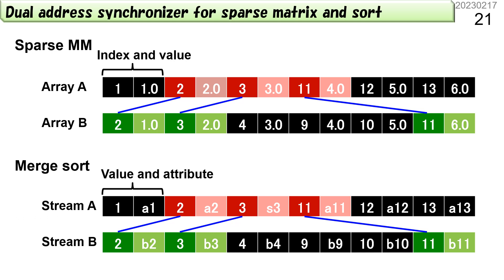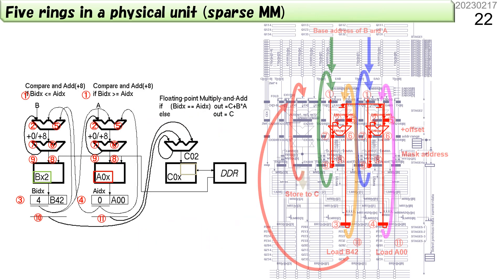Let's see the data format. The number and the value are packed in an element. In sparse MM and merge sort, two address generators should stop and go based on the relationship of the loaded number. To find out two elements with the same number and multiply them, the address generator on the smaller side should go forward, and the other side should stop. In IMAX3, each unit has the address synchronizer and can execute sparse MM at full speed.